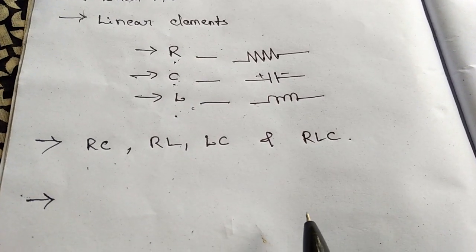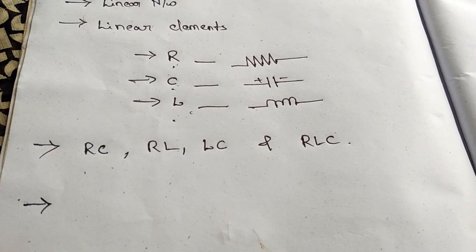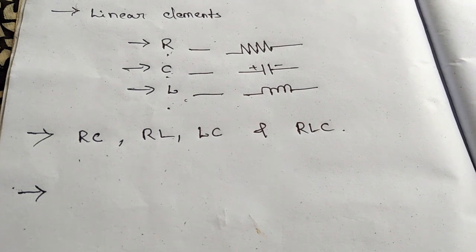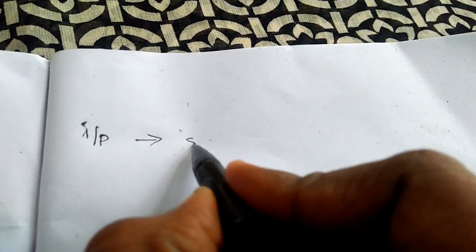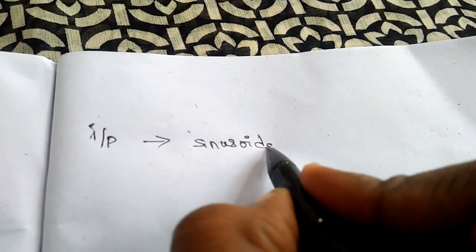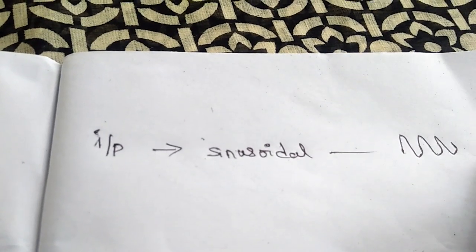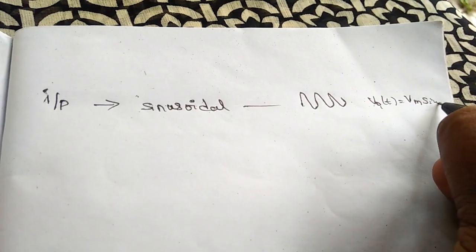In Linear Wave Shaping, we are getting the response of a Linear Network by giving different types of inputs. By using RC Networks, we are finding the response to different inputs. Those inputs include Sinusoidal, which has the form vi(t) = Vm × sin(ωt).